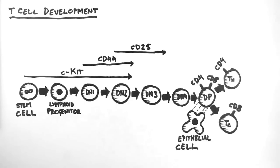This means that by knowing if the cell expresses any of the CD44, CD25, CD4 and or CD8, you can tell which stage it is in.